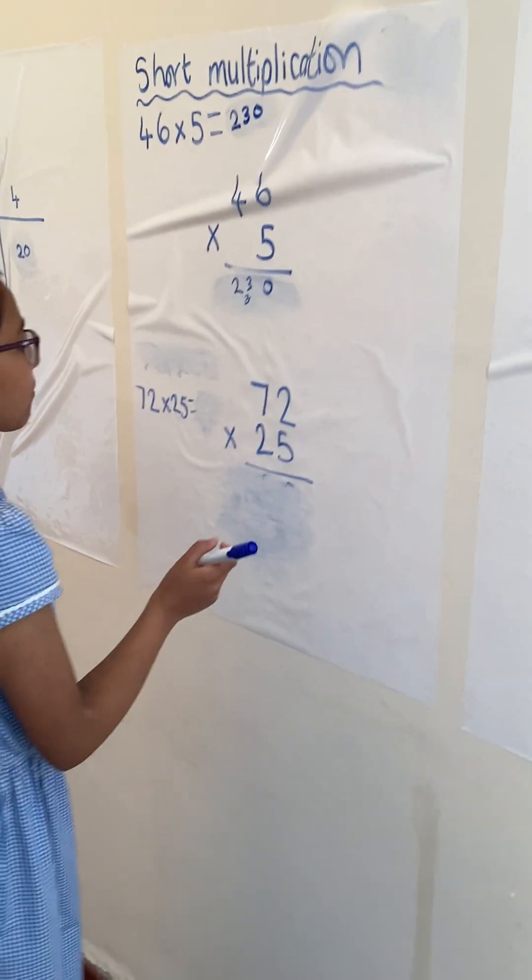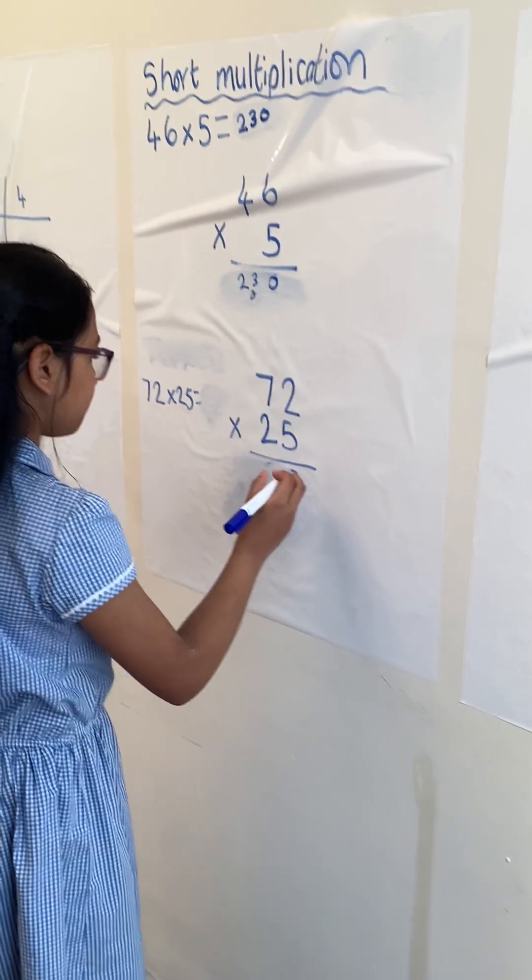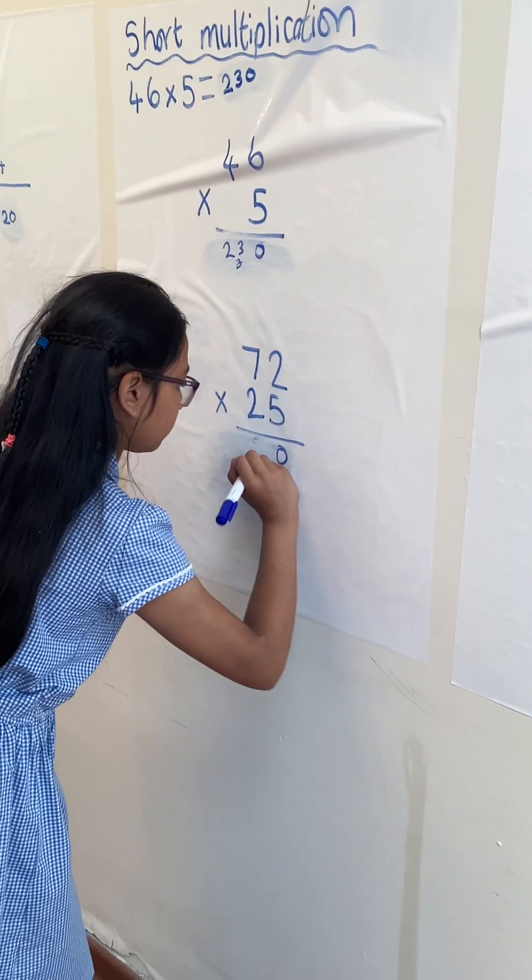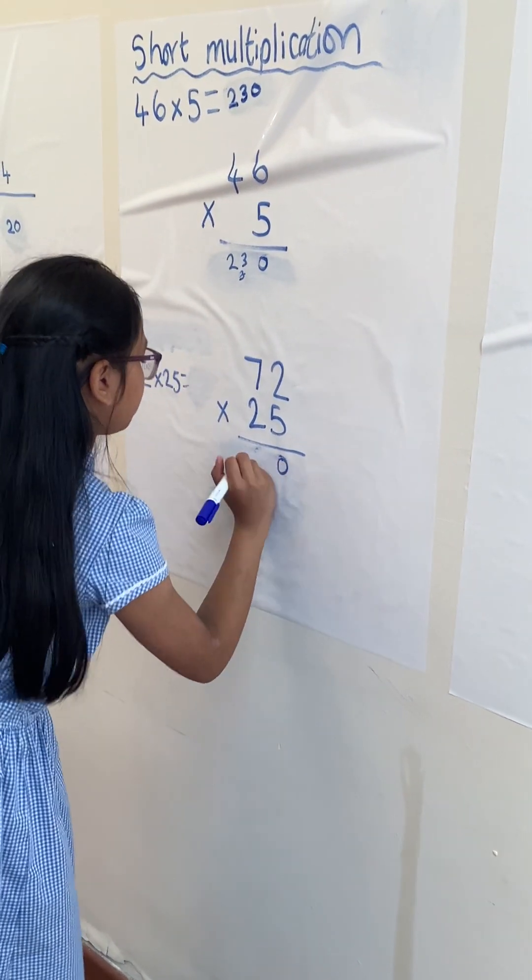Then moving on to short multiplication again, but 2 digit numbers. So we've got 72 times 25. We start with 5 times by 2, then 5 times by 7.